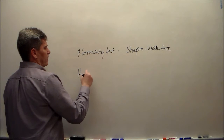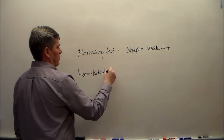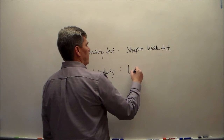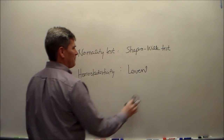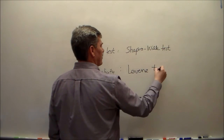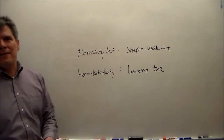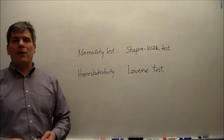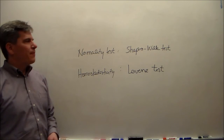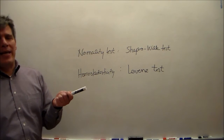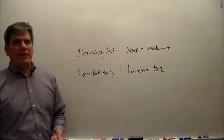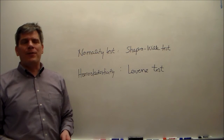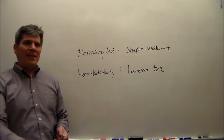For the test of equal variances, we're going to use the Levene test. There are a lot of tests of homoscedasticity, and the Levene test is one of the best. The Shapiro-Wilk test is one of the best for normality — there are better, there are worse, but these are good. The next step is to figure out how to do these tests in your statistical environment of choice. If you're an R person, go to the R video for lecture two. If you're a SAS person, go to the SAS video for lecture two.